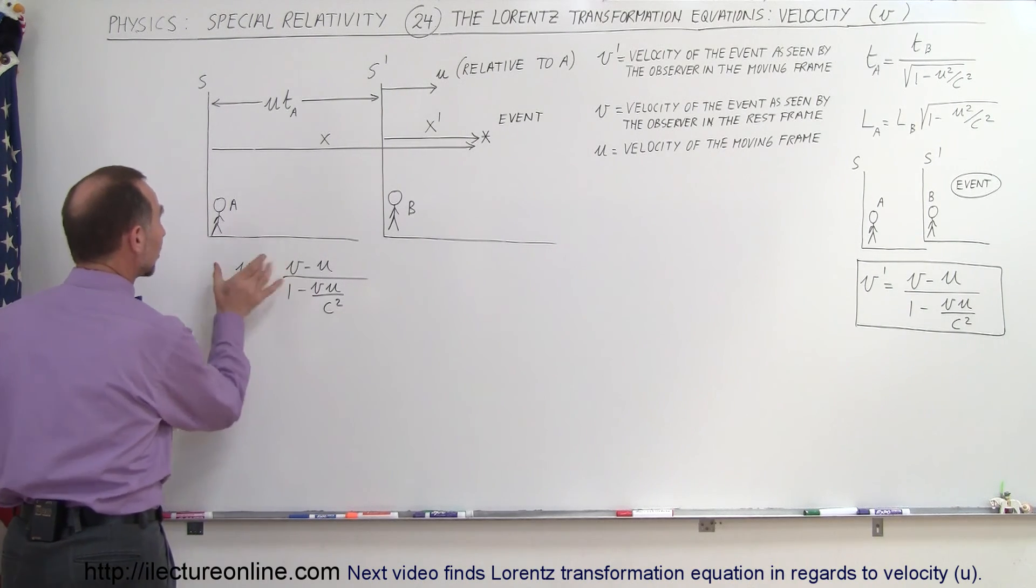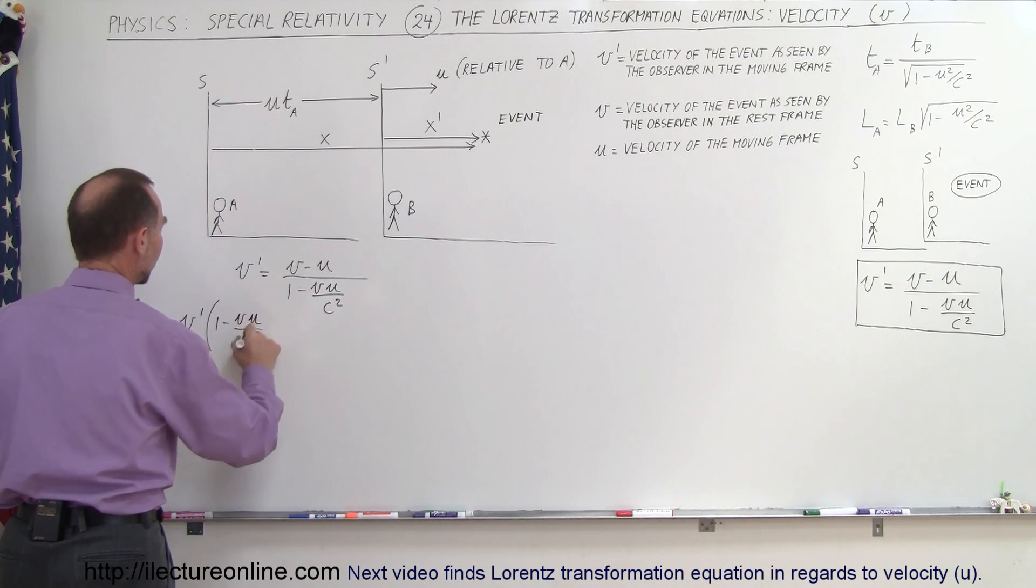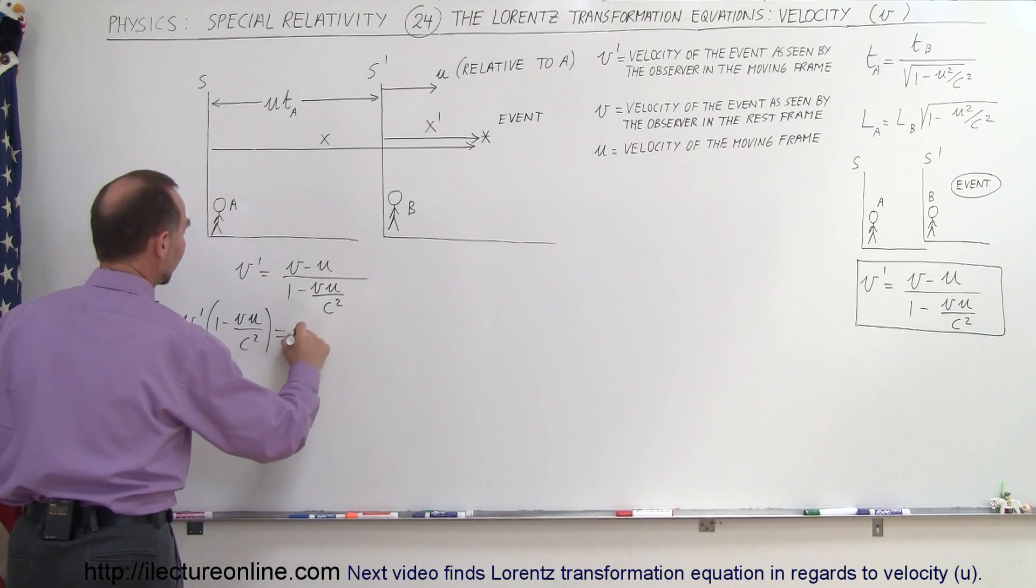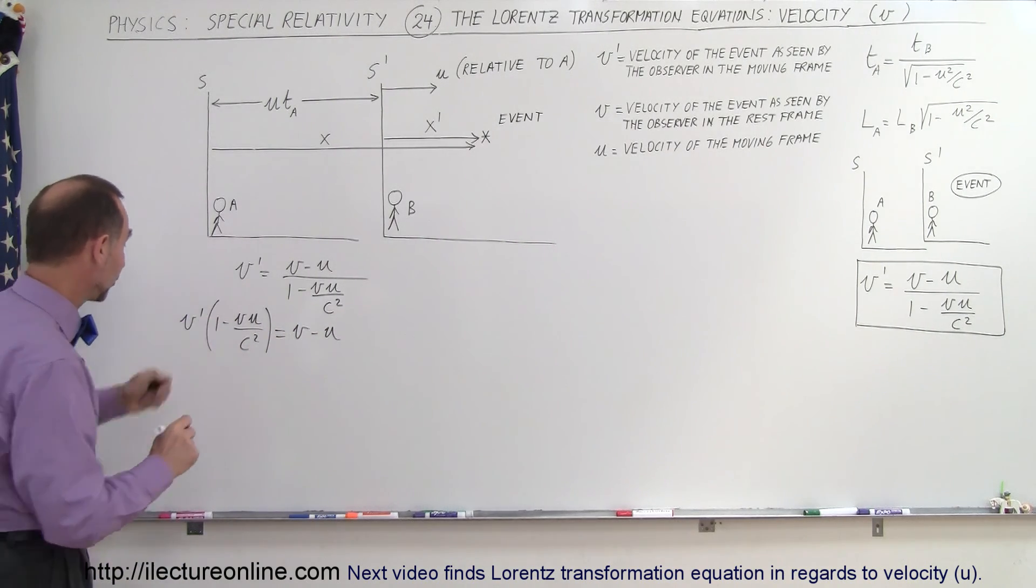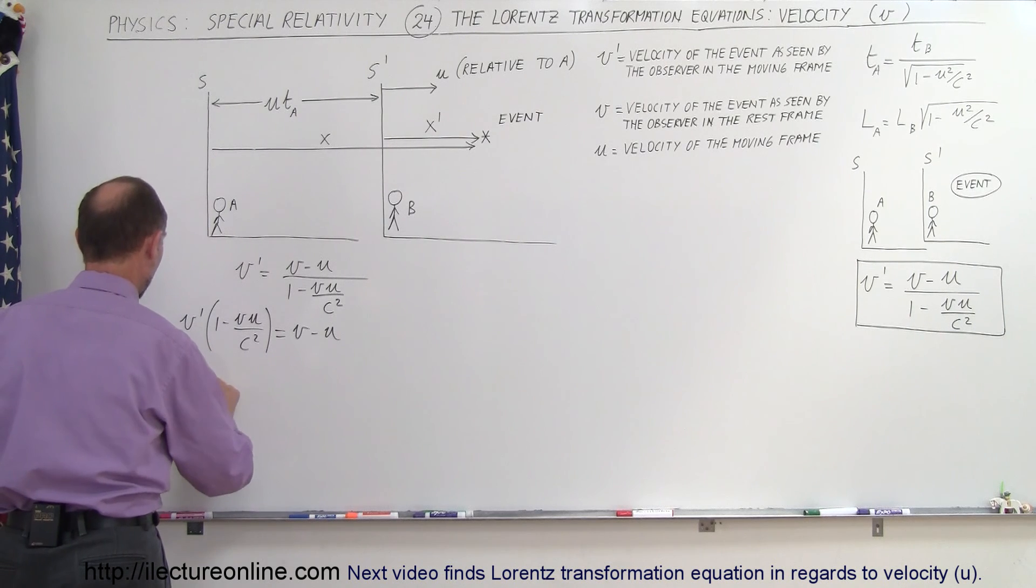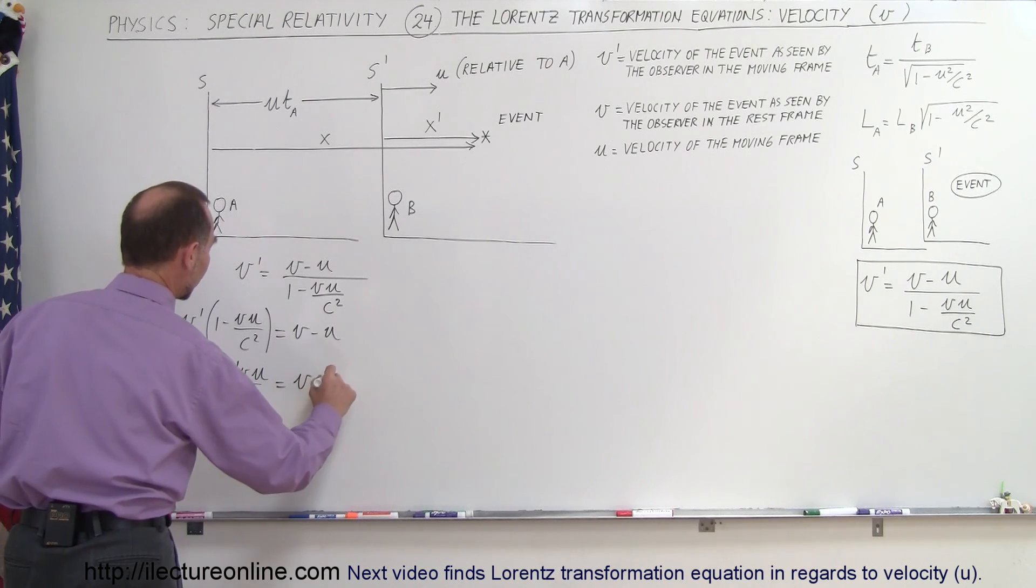We first move this quantity over to the left side. So this becomes V' times 1 minus VU over C squared is equal to V minus U. Now we get rid of parentheses by multiplying this through. So now we get V' minus V' V times U over C squared is equal to V minus U.